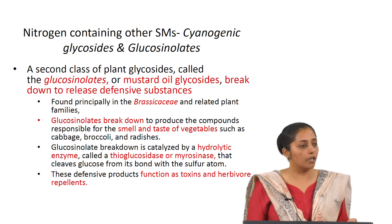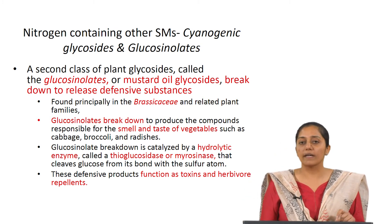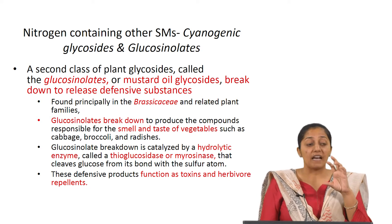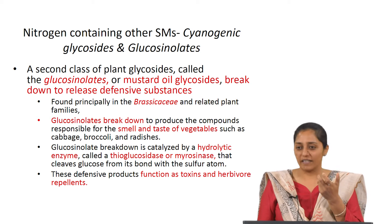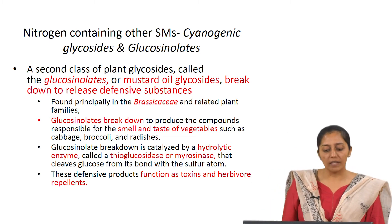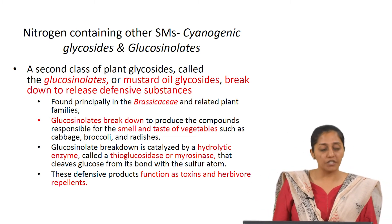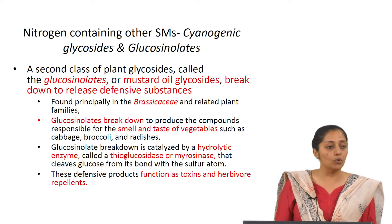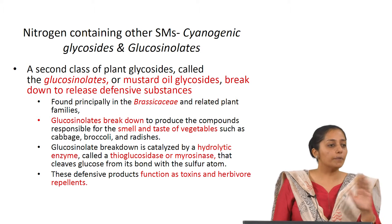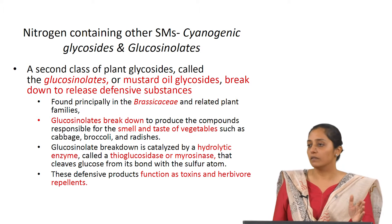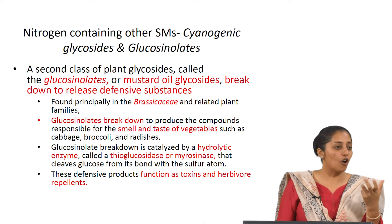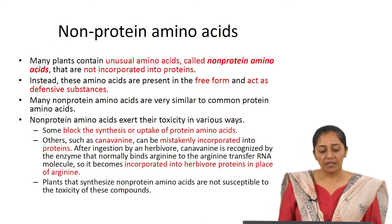The second class of plant glycosides is glucosinolates, also called mustard oil glycosides. They are present in plants like cabbage and radish, giving a strong distinctive taste that acts as a feeding deterrent. Glucosinolate breakdown is catalyzed by the hydrolytic enzyme thioglucosidase (myrosinase), which cleaves glucose from its bond with the sulfur atom. The conjugates are not toxic, but the final breakdown products lead to strong smell and taste in fruits or plant parts.